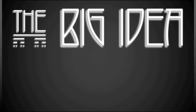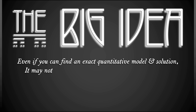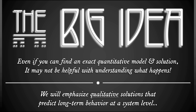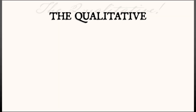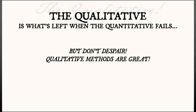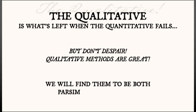The big idea that motivates what we're going to do in dynamical systems is this: even if you can find an exact quantitative model and solution, it might not be helpful. What we need to do is pass from the exact and the quantitative to the qualitative. We're going to learn some methods for finding qualitative solutions that help predict long-term behavior at a system level. We are going to emphasize the qualitative — what is left when the quantitative fails. We're not going to give up in the face of complexity. Qualitative methods are going to be very effective and very efficient. In the end, we're going to have an elegant set of techniques.